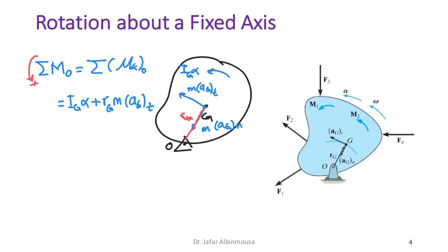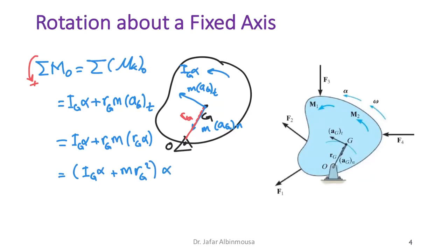Simplifying further: I_G·α + M·r_G²·α. This is recognizable as the parallel axis theorem, so I_G + M·r_G² = I_O. Therefore, the sum of all moments about the center of rotation O is simply I_O·α.